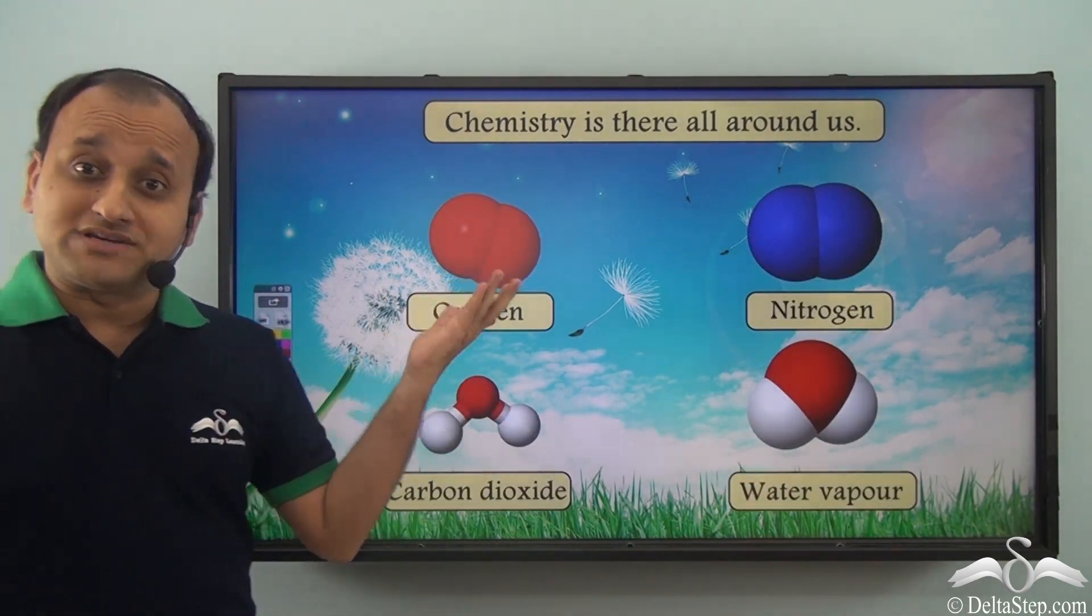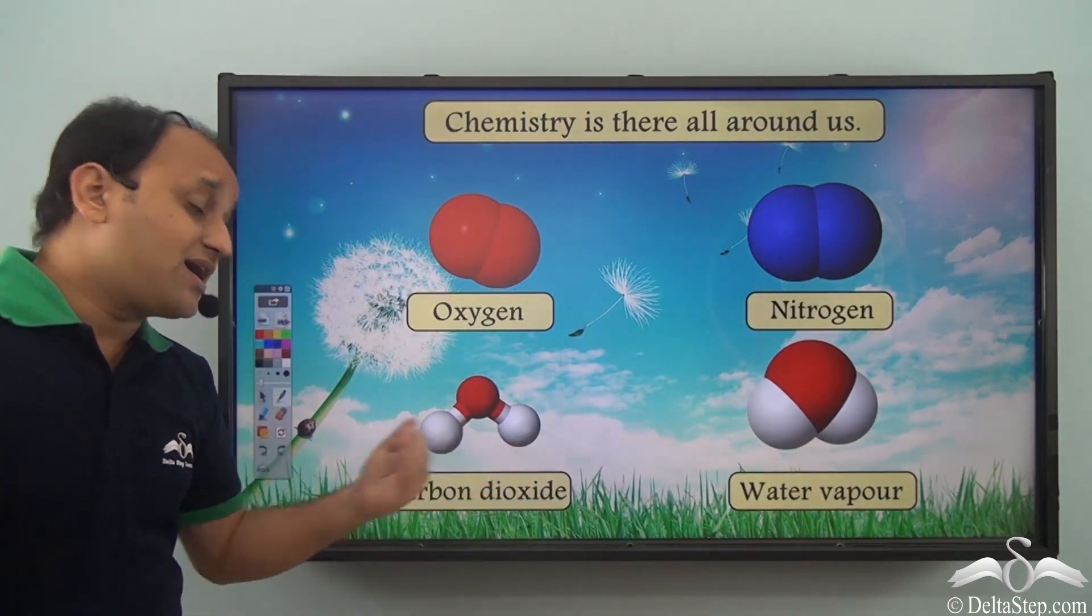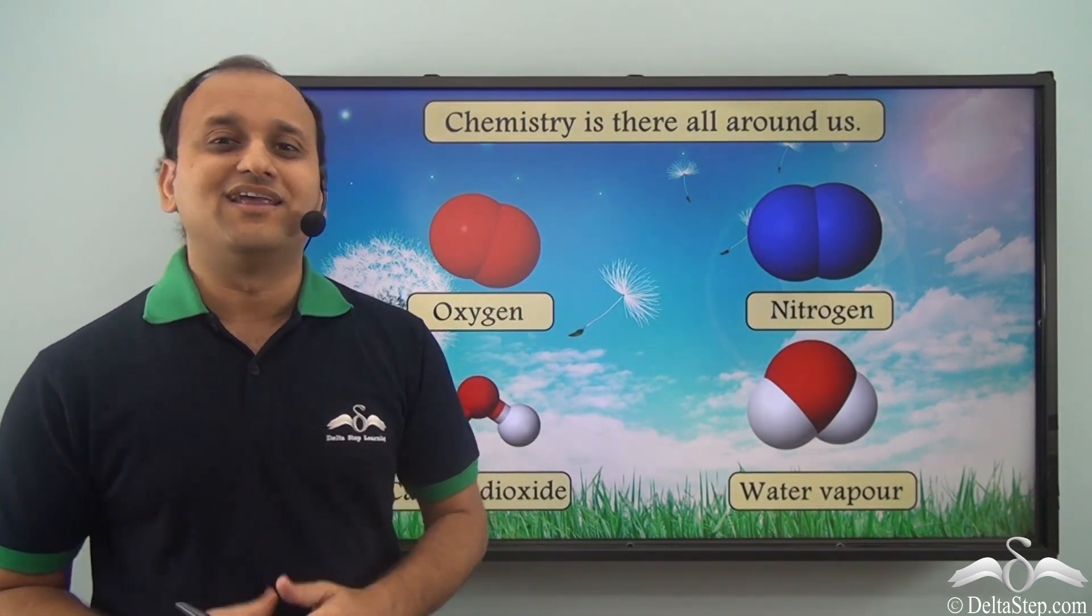So when we talk about air, it contains oxygen, nitrogen, water vapor, carbon dioxide. Now what are these? These are all chemical elements.